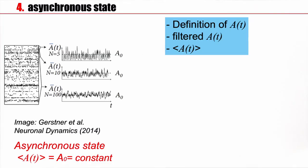What was our definition of the activity? I take a small time window Δt and I count the number of spikes. So I have my population activity Ā(t), which is the number of spikes between t and t plus Δt. And then I divide by the number of neurons and I divide by Δt.